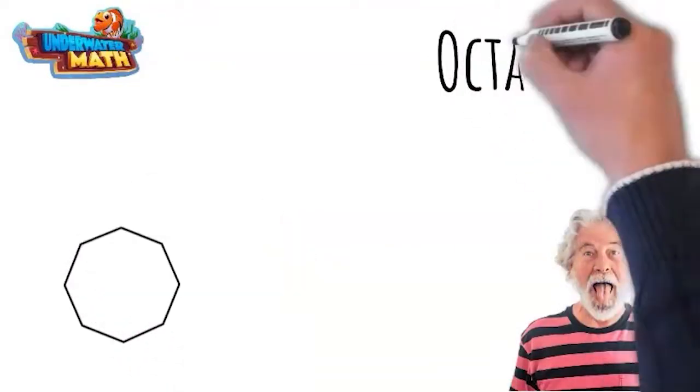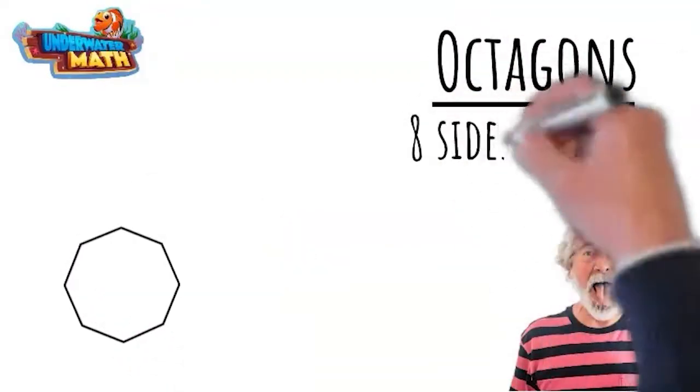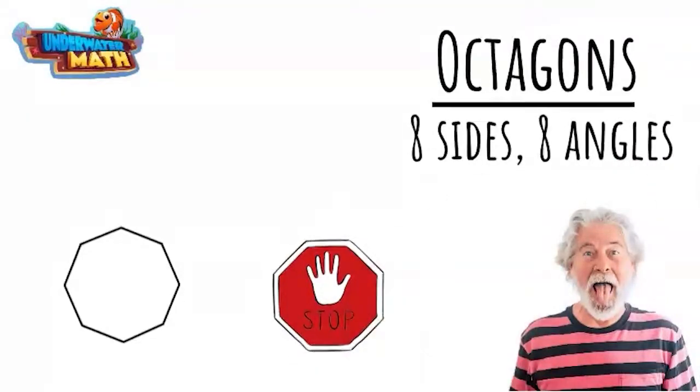Eight-sided shapes are octagons. They have eight each of corners and angles. They commonly disguise themselves as stop signs. You'd better watch out for them and stop whenever you see them.